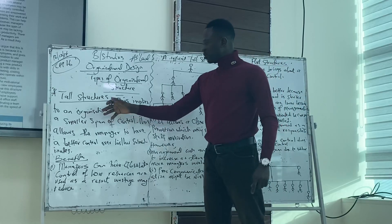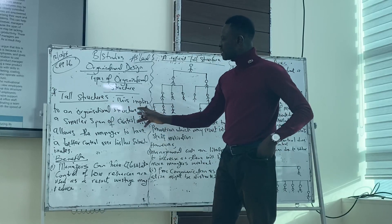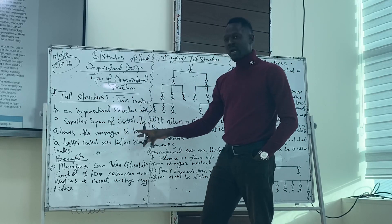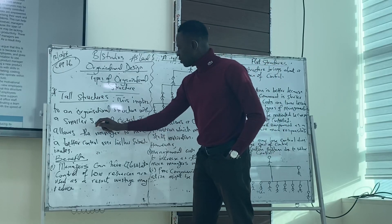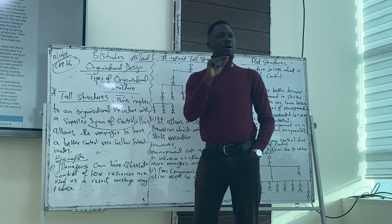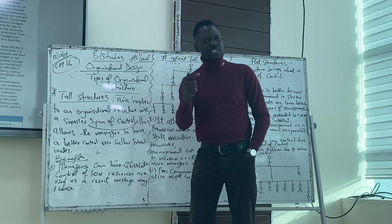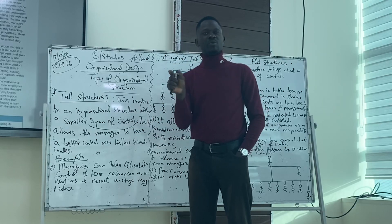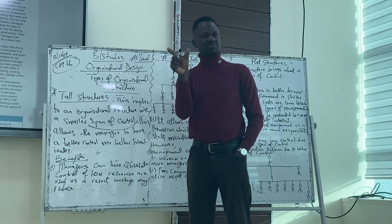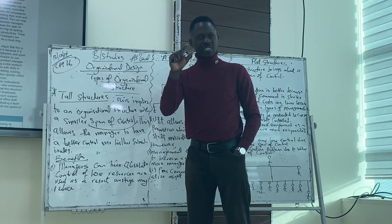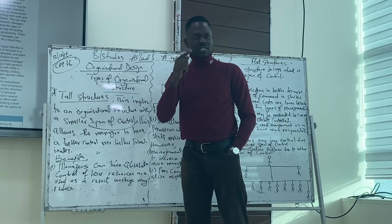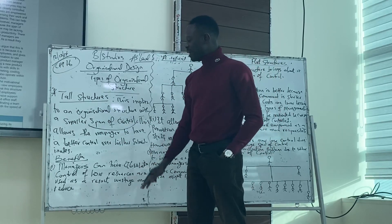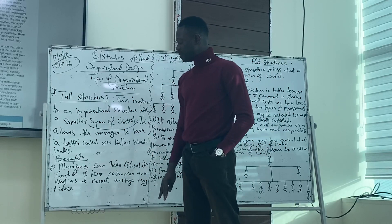Tall structures: this implies an organizational structure with a smaller span of control. And when we talk about span of control, we're talking about the total number of subordinates under a single manager. Here, it means we have two, three or four subordinates under one manager. That is a small span of control.